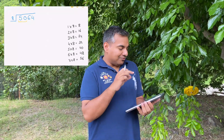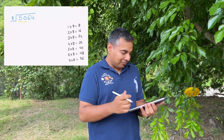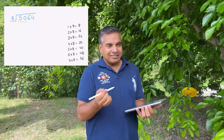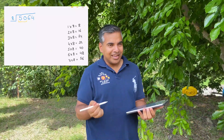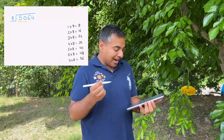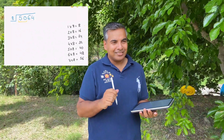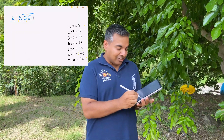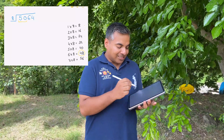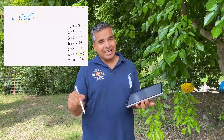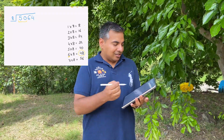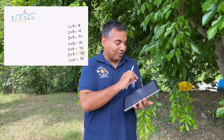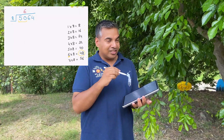Fifty divided by eight — looking at our table from step one, fifty is not directly in it, but the closest smaller number is forty-eight. So we circle forty-eight and note that forty-eight divided by eight equals six. We write the number six at the top of the line, above the digit zero.